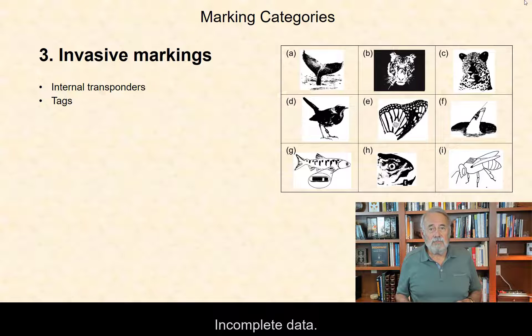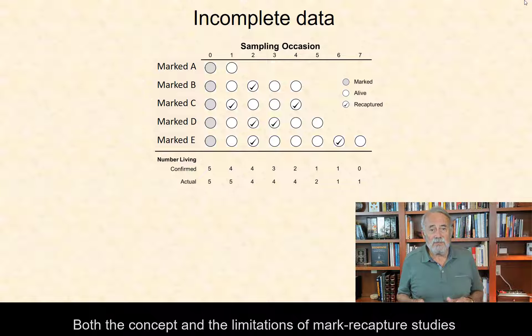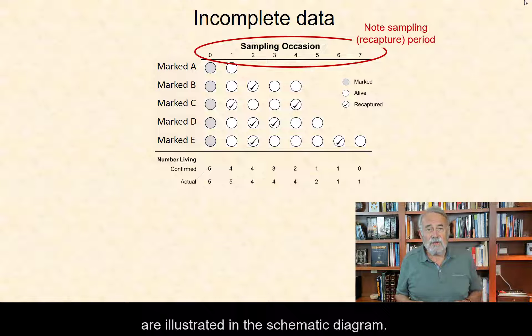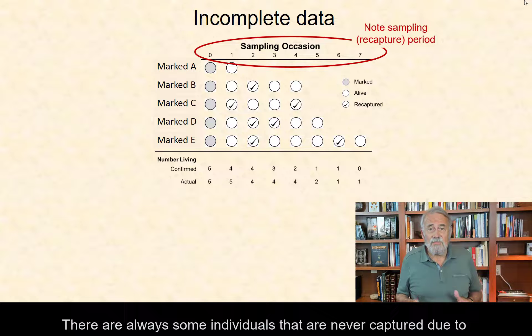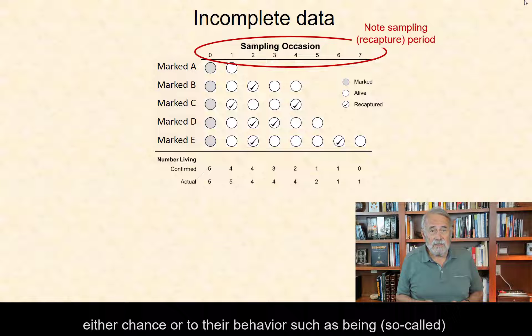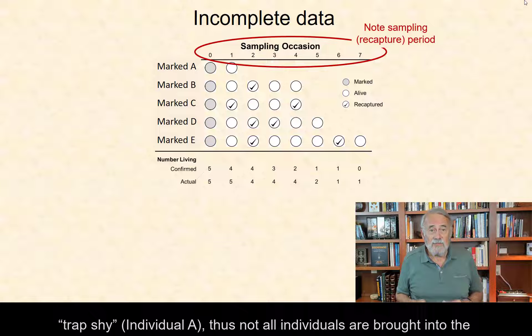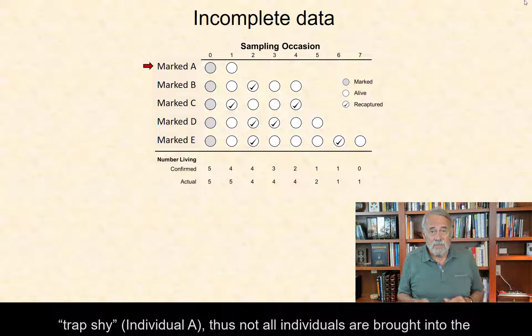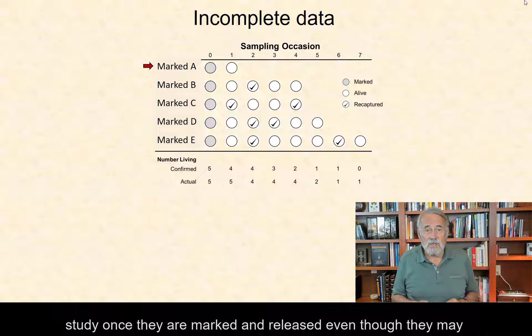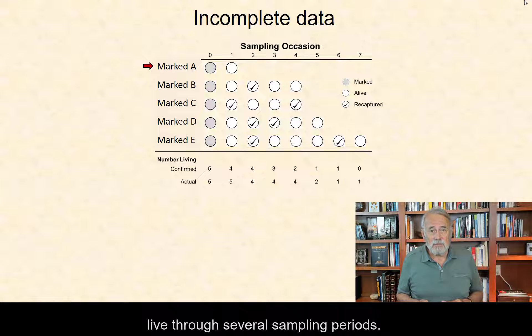Incomplete data. Both the concept and the limitations of mark-recapture studies are illustrated in this diagram. There are always some individuals that are never captured due to either chance or to their behavior, such as being so-called trap-shy, individual A for example. Thus, not all individuals are brought into the study once they are marked and released, even though they may live through several sampling periods.